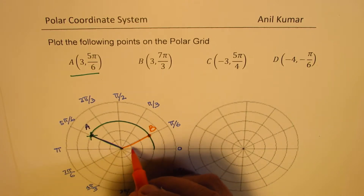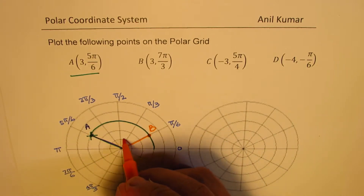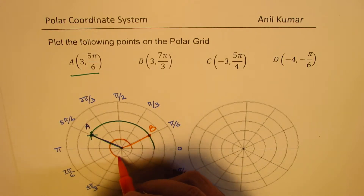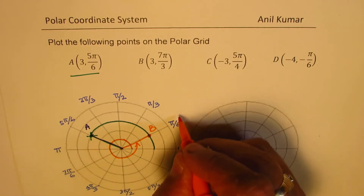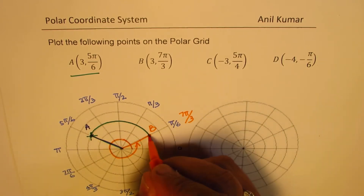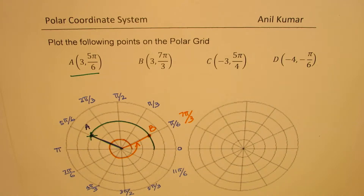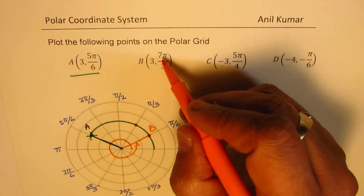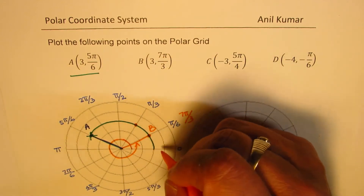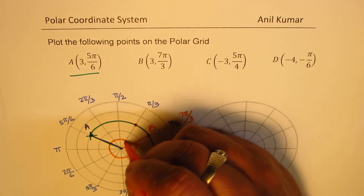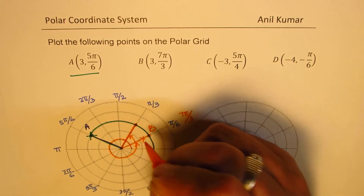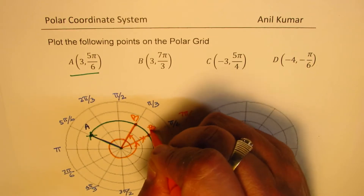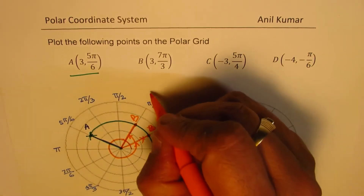So for point b you go around one full circle — 6π/3 — and then the remaining π/3 brings you to this position. To be clear, 7π/3 lands here at the π/3 angle at 3 units, so that is point b.